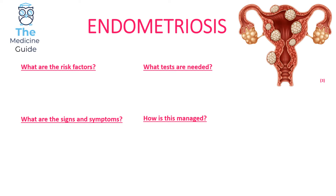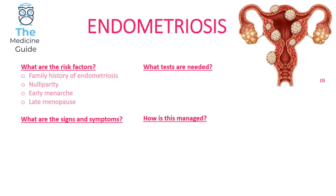Endometriosis is when there is growth of ectopic endometrial tissue found outside of the uterine cavity. These endometrial cells will follow the same menstrual cycle as normal cells. Risk factors associated with endometriosis include a family history of endometriosis, nulliparity, early menarche, and late menopause.